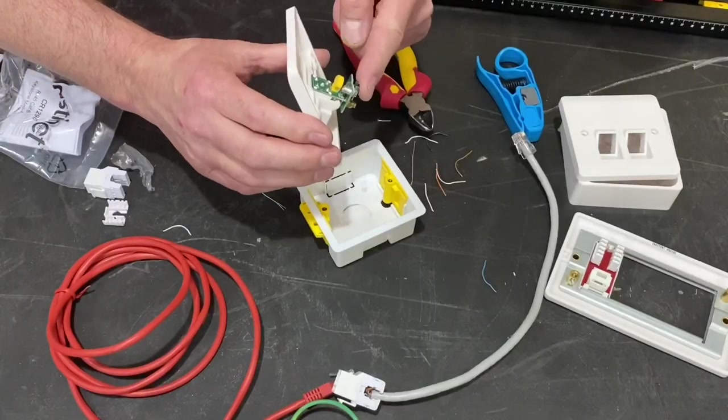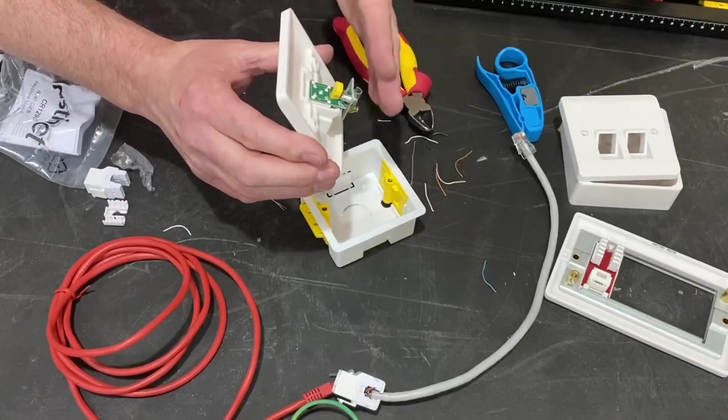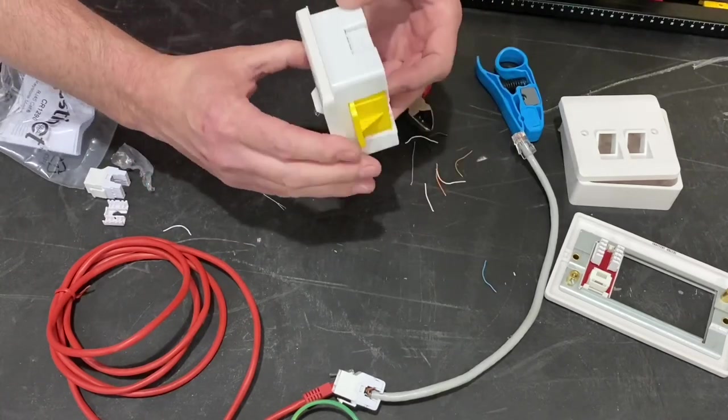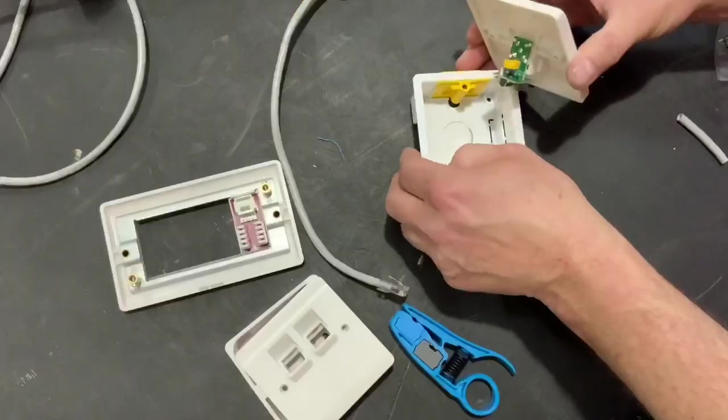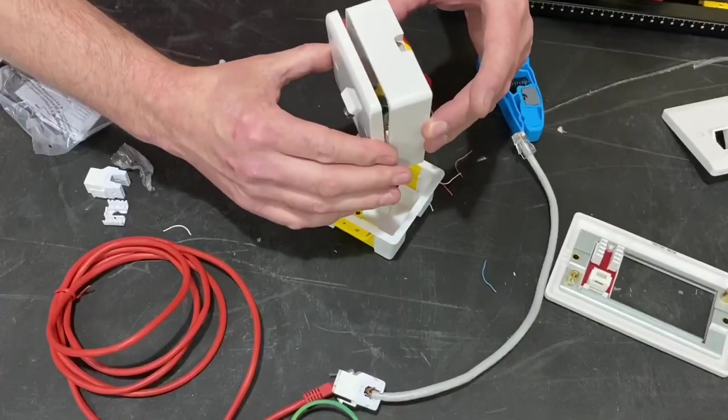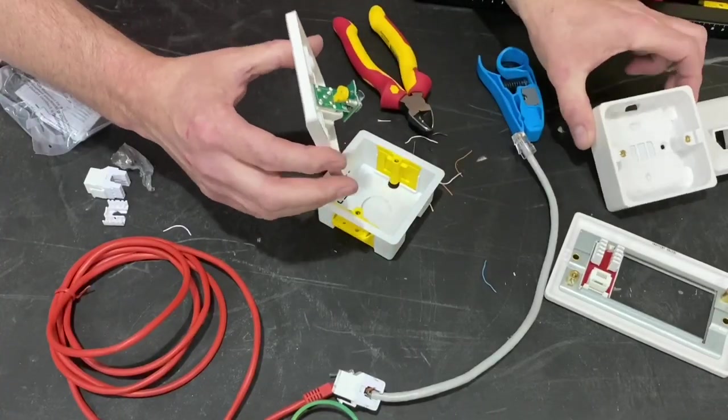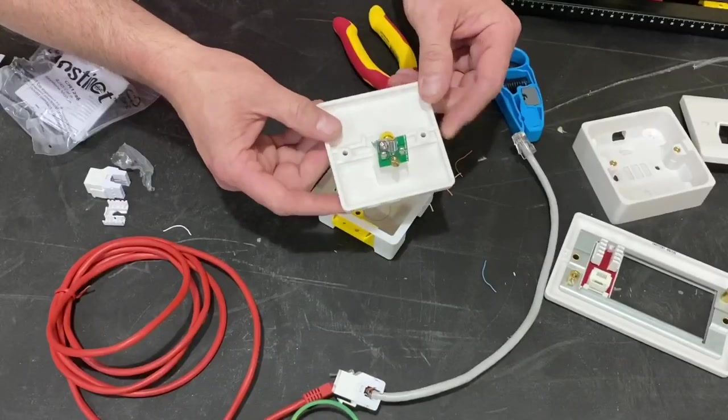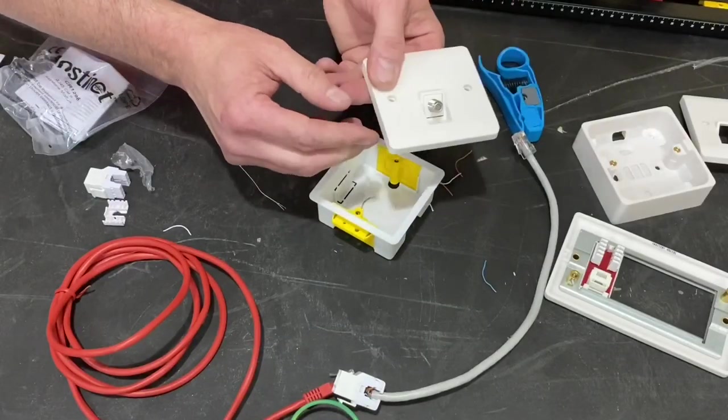Another tip with these is you're going to need a box that's at least 32mm deep, so fine in a dry line box, not a problem at all. If you're going to chase one into a wall, just be careful. 28mm aren't quite deep enough. So if you're going to chase a box into the wall, just use a slightly deeper box in order to make the connection to this style.